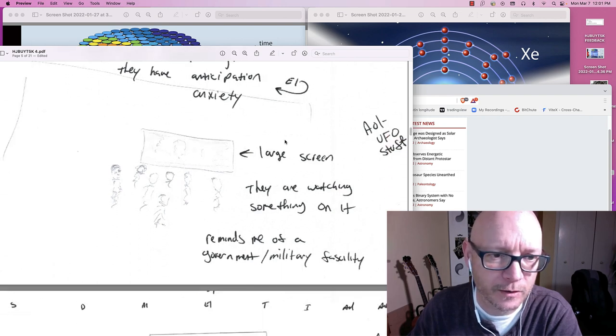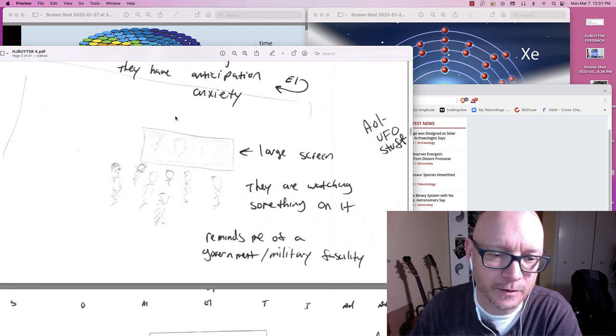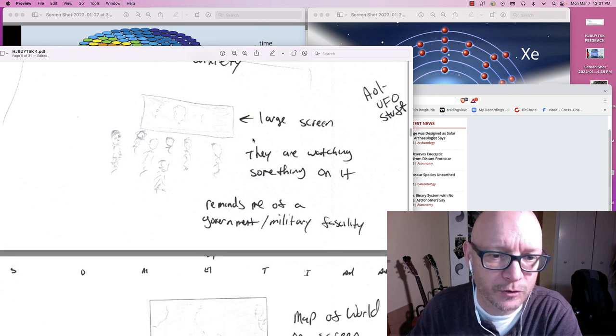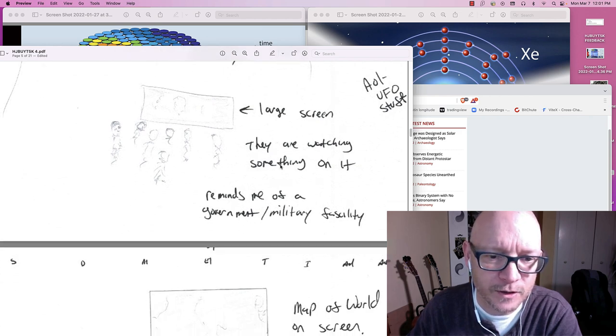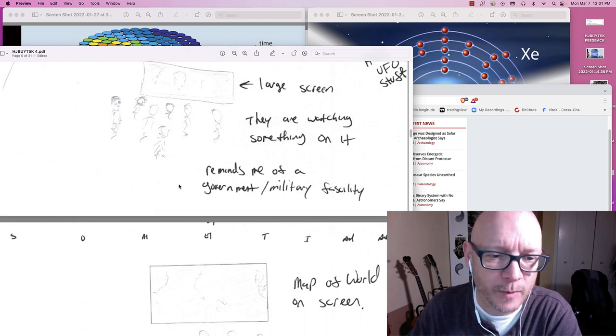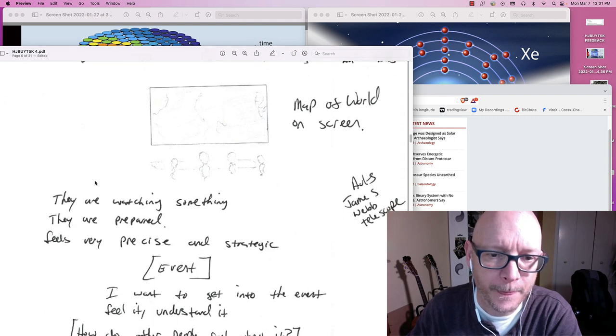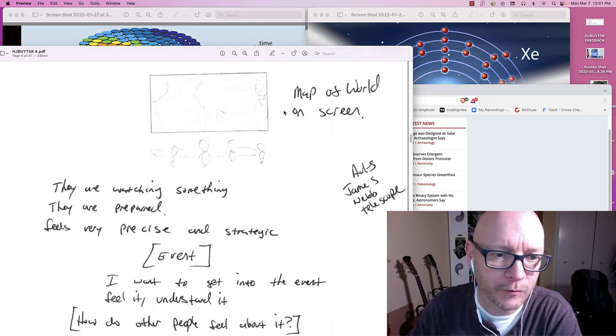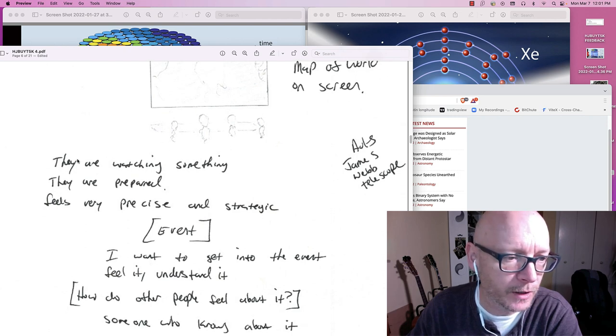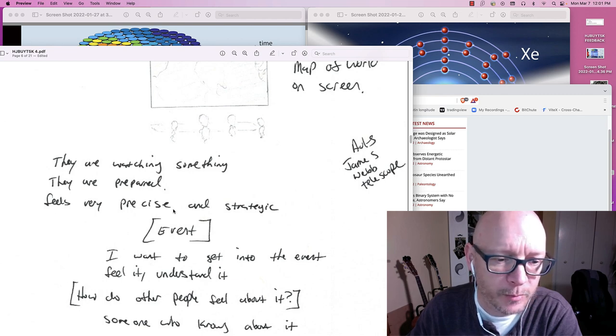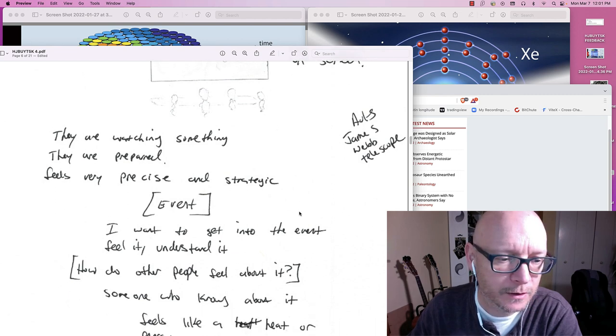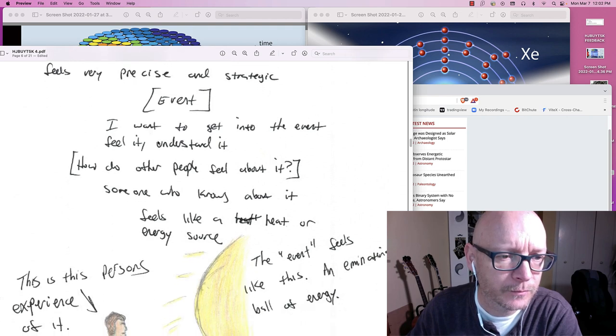And here were these people in there. There is a large screen. They are watching something. They are watching something on the screen. It reminds me of a government or a military facility. Here is a map of the world on the screen. And these people are here. They are looking at it. They are watching something. They are prepared. It feels very precise and strategic. But what is the event though, I wonder? I want to get into the event. I want to feel it. And I want to understand it.